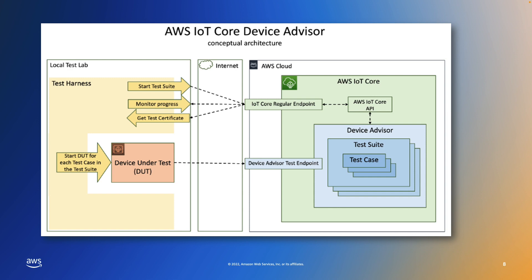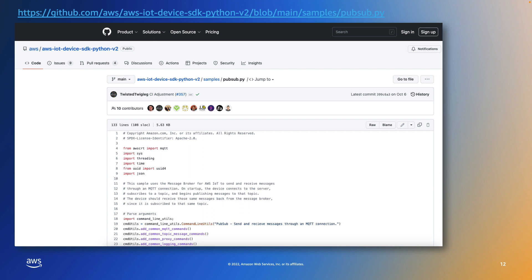In this high level conceptual architecture diagram, we can see the four main components of the demonstration: the IoT Core service and API that will be used to manage the test process; the Device Advisor service itself, which will execute the tests and provide a unique, non-production Device Advisor test endpoint for the device under test to connect to; the Test Harness, which uses the Python SDK to automate the test process; and finally, the actual device under test, which in this case is the pubsub.py client provided in the AWS IoT Python SDK samples on GitHub.